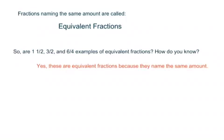So fractions naming the same amount are called equivalent fractions. You may have heard that word before. Make sure you have that written down for yourself. Give yourself the definition. Fractions that name the same amount are called equivalent fractions. So with that being said, are 1 and 1 half, 3 halves, and 6 4ths examples of equivalent fractions? And how do you know? Hopefully you can say, yes, these are equivalent fractions, because they name the same amount. Each of the brothers got the same amount of pizza, no matter which of those 3 ways I tried to divide them. Therefore the fractions are all equivalent fractions. Make sense? Hope so.